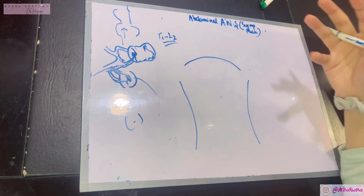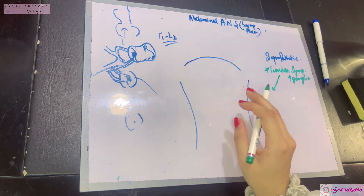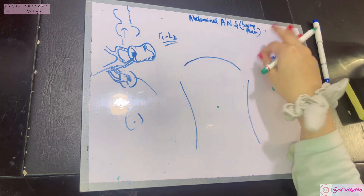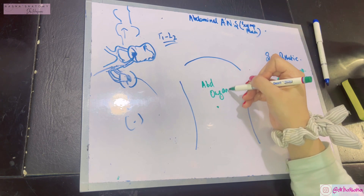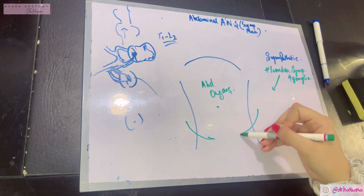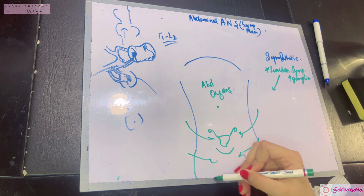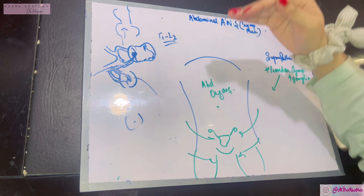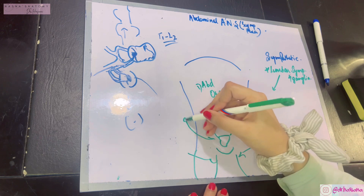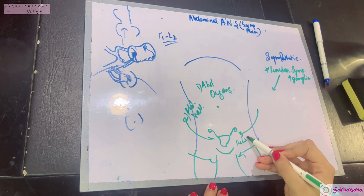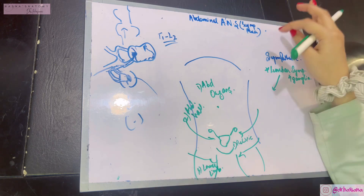How will your abdomen get sympathetic and parasympathetic fibers? Before getting started, let's clarify what structures we need to supply when we talk about the abdomen. The structures are: number one, the abdominal organs; number two, the abdominal wall; number three, the pelvic organs; and number four, the lower limb. Our goal today is to supply all these areas with both parasympathetic and sympathetic supply.